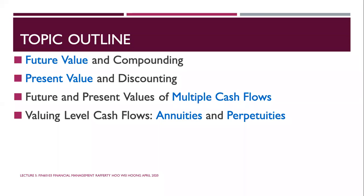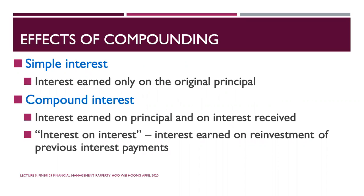The outline covers future value and compounding, present value and discounting, future and present value of multiple cash flows, and valuing level cash flows — annuities and perpetuities — which we'll do next week. Starting with the effects of compounding: simple interest means interest is earned only on the original principal. Compound interest means interest is earned on the principal and on interest received, and depending on the frequency, compounding can occur yearly, monthly, or daily.